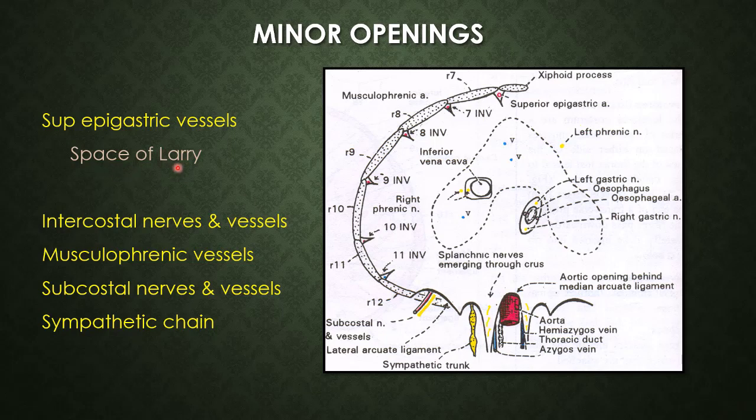The space of Larrey, if extended or enlarged, can cause herniation of abdominal contents into the thoracic cage. That dilated part of the space of Larrey is called the foramen of Morgagni, and the hernia is called Morgagni's hernia.